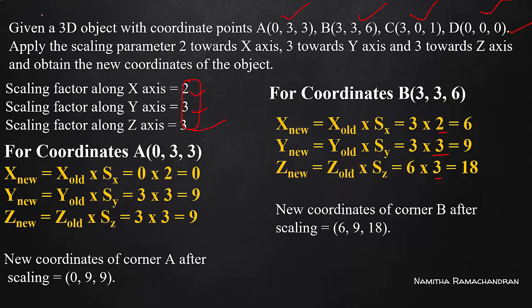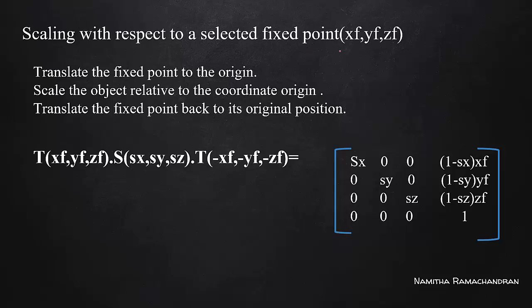Next is a composite transformation case: scaling with respect to a selected fixed point. If we use a pivot point or fixed point with coordinates (xf, yf, zf) to scale, rather than scaling with respect to the origin. This involves three steps: first, translate so that the fixed point becomes the coordinate origin (using translation parameters -xf, -yf, -zf); then apply the scaling matrix; then perform reverse translation back to position (xf, yf, zf).